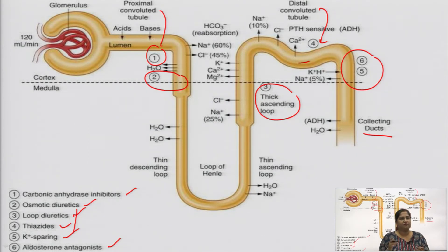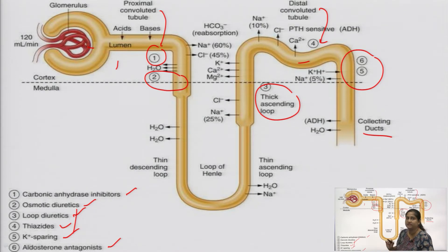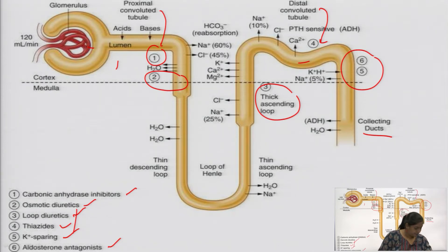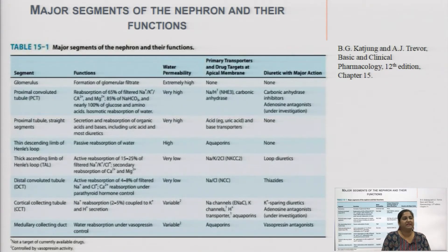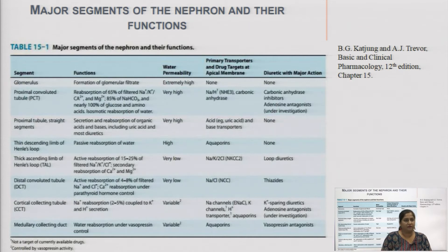The main function of the nephron is filtration. The glomerulus filters the fluid coming in, and these drugs work on various sites of the nephron to filter out unwanted metabolites and ions through the urine. In this chart you can see the major segments of the nephron and their functions. In the previous slide we discussed the sites, and now we discuss what those segments do.